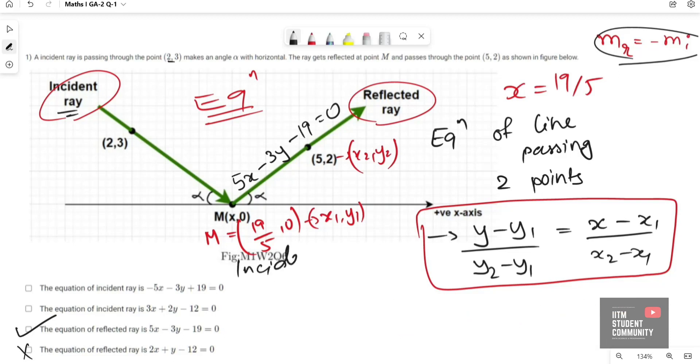Now let us find equation of incident ray. Using the same formula, take (x2, y2) as (2,3) and (x1, y1) as (19/5, 0). So (y minus 0) divided by (3 minus 0) equals (x minus 19/5) divided by (2 minus 19/5).